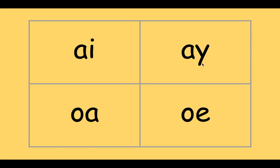Next word: 'aim.' I will aim for the goal. That's AI—it comes at the beginning. Next word: 'doe.' Doe is a female deer. I hear it at the end, so that's OE.